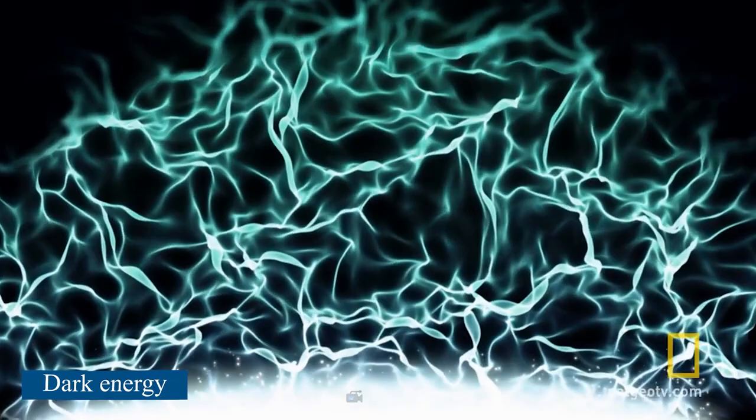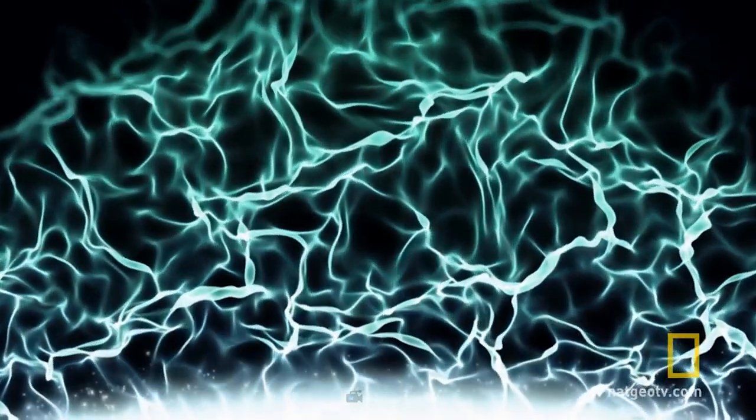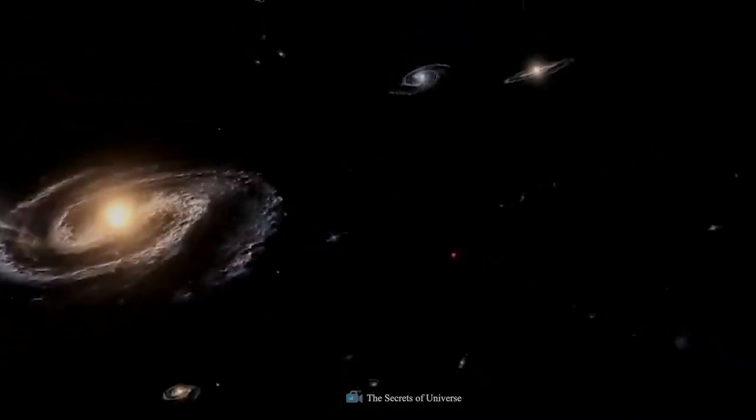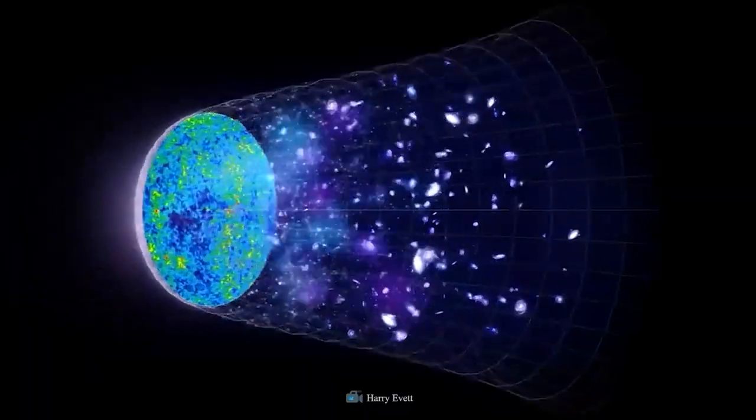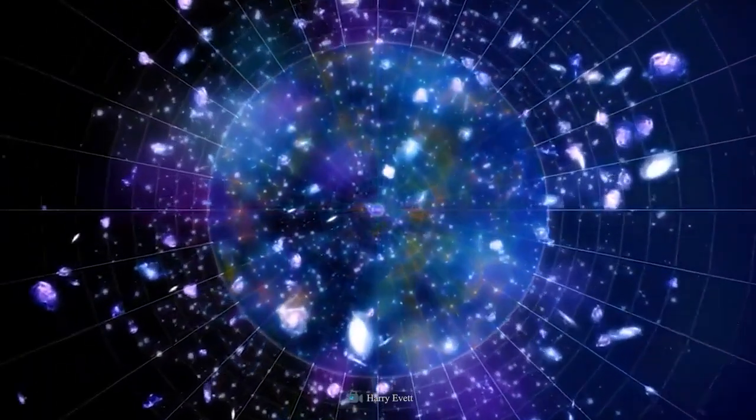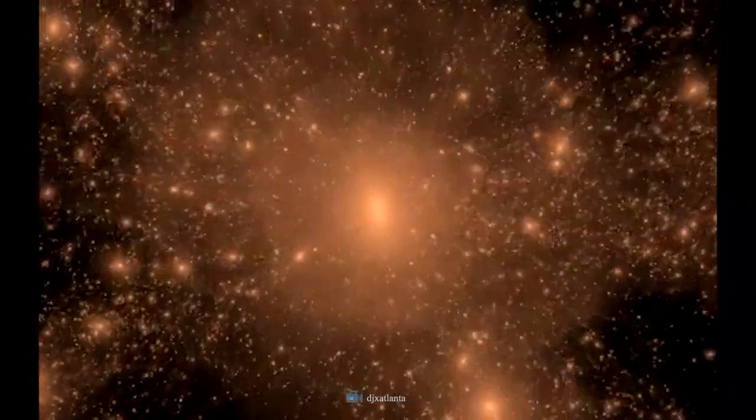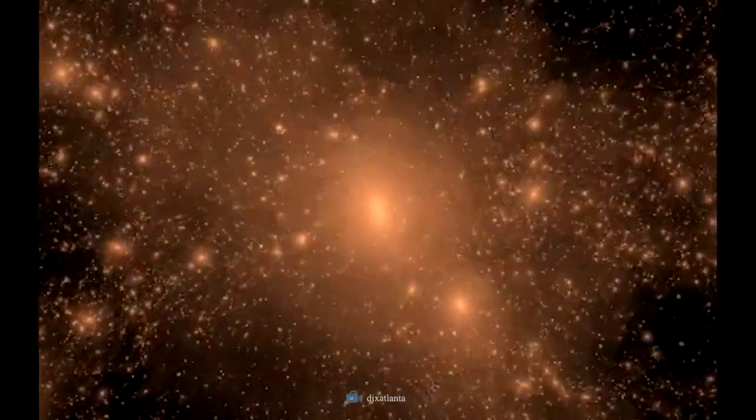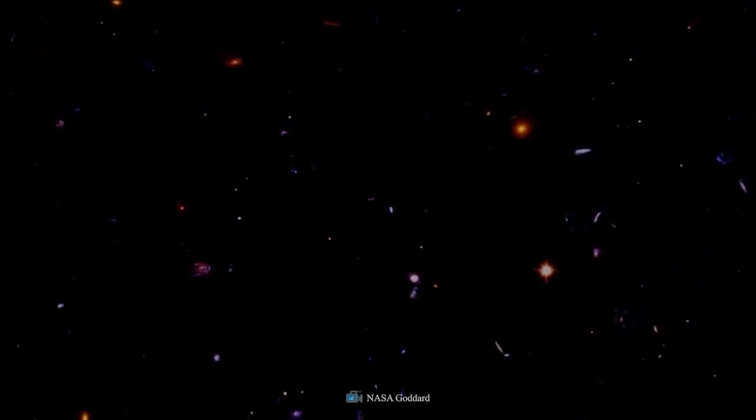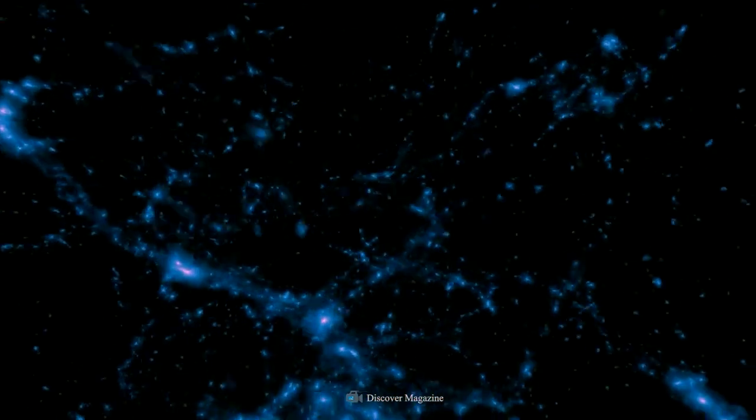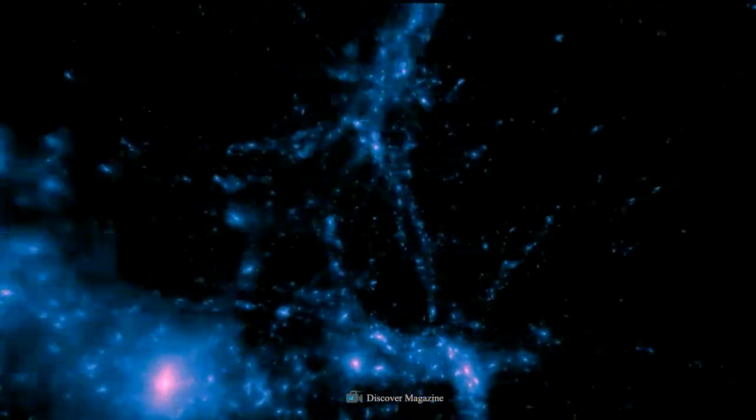Dark energy accounts for approximately 68% of the cosmos and appears to be related with the vacuum in space. It is spread out evenly across the universe, both in space and in time. This means that its effect doesn't get weaker as the universe grows. Due to its uniform distribution, dark energy does not affect the local gravitational fields of galaxies, but rather the entire cosmos. As a result, a repulsion force is generated, which causes the expansion of the cosmos to quicken.